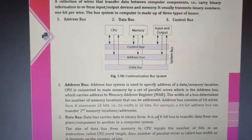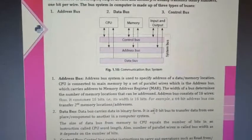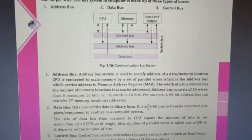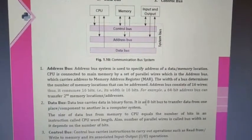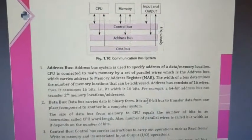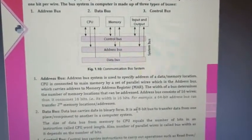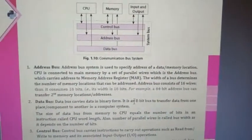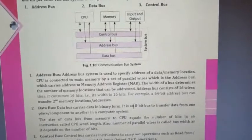The address bus system is used to specify the address of data memory locations. The CPU is connected to main memory by a set of parallel wires — the address bus — which carry addresses to the memory address register. The second is the data bus, which carries data in binary form. All data traveling from one place to another does so through the data bus. It is an 8-bit bus that transfers data from one component to another in the computer system.